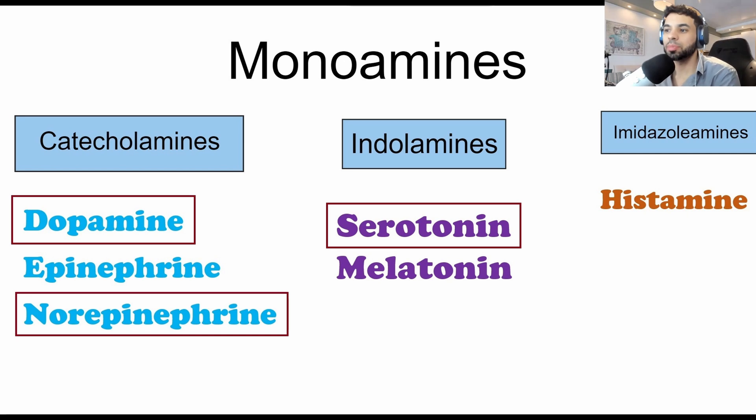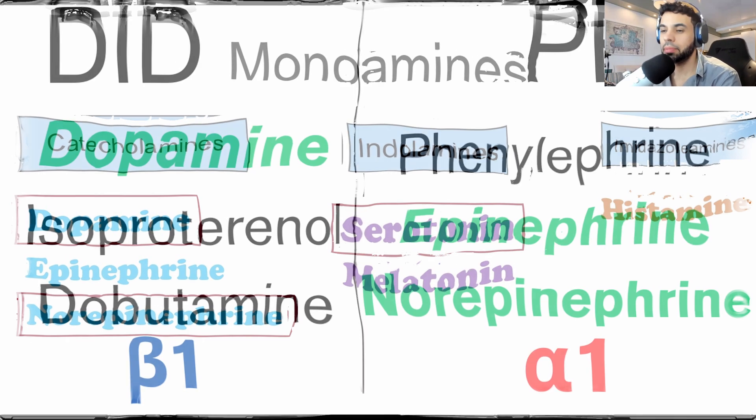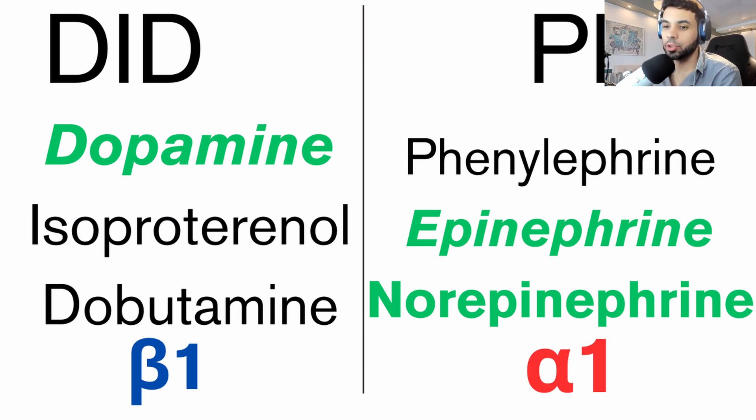So monoamines are these specific types of neurotransmitters, but here we're focusing on the catecholamine type, which you will find on this list, DEN, dopamine, epinephrine, and norepinephrine.